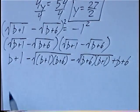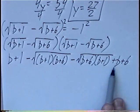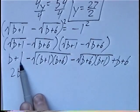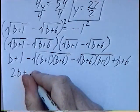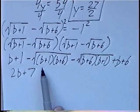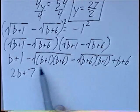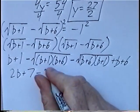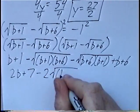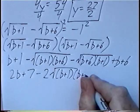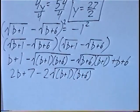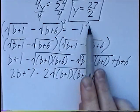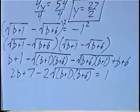Combining like terms: b plus b is 2b, and 1 plus 6 is positive 7. The two middle radical terms combine to minus 2 times radical of b plus 1 times b plus 6. This was equal to negative 1 squared, which equals positive 1. We started with 2 radicals; after squaring, we're left with a single radical, which we can isolate and square again.